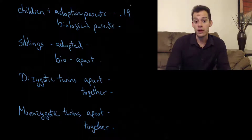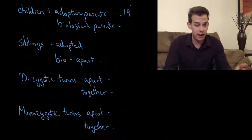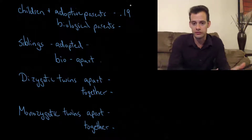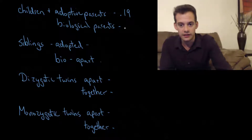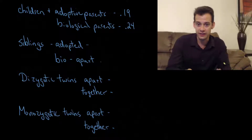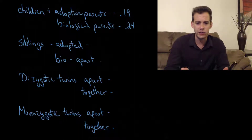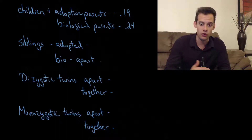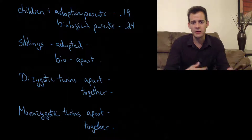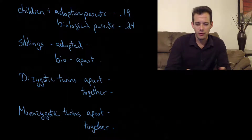We can also compare that to the children and their biological parents. So these adopted children — how similar are their IQs to their actual biological parents? In this case we see that the correlation is 0.24. This suggests that genes are playing a role here. If you're an adopted child, your IQ is going to be more similar to your biological parents than it is to your adoptive parents who are raising you. But we really want to know about the environment that the child is actually living in.